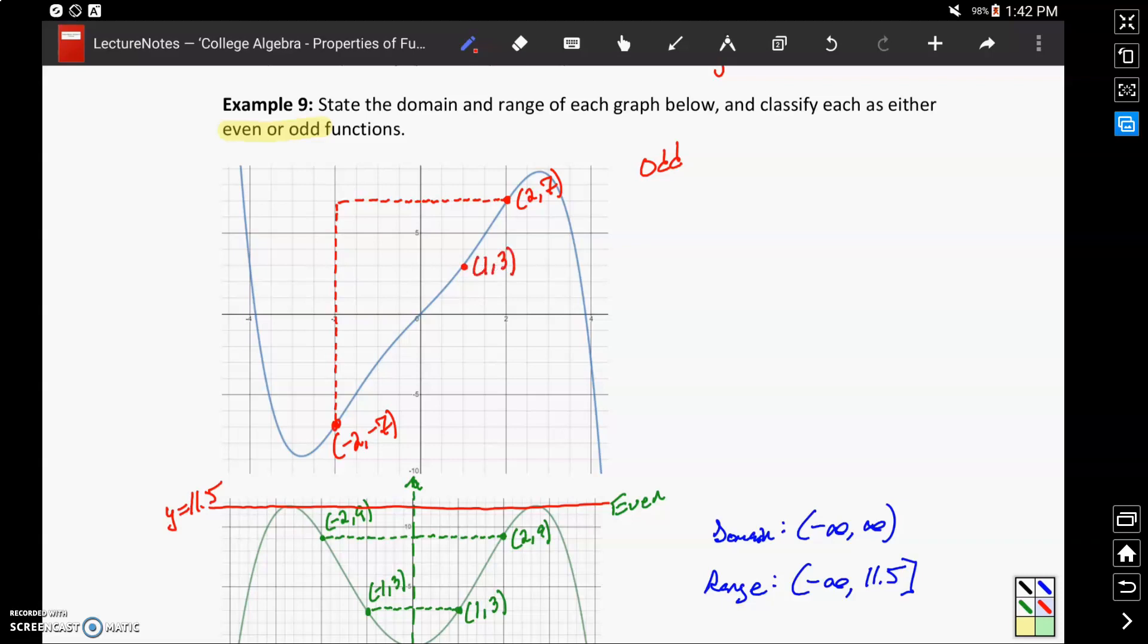If we reflected this first about the y-axis and then about the x-axis, we would hit the point negative 1, negative 3.